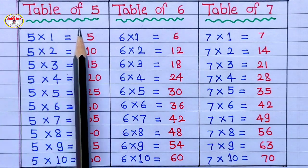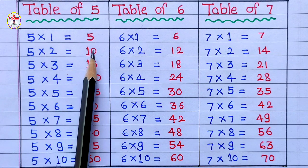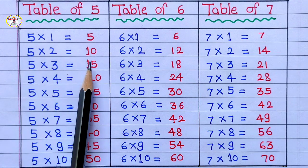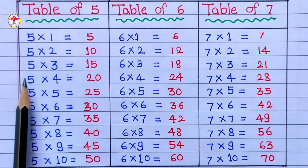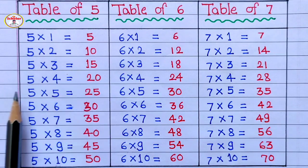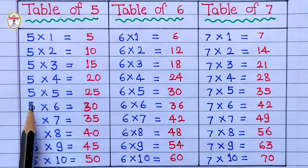Table of 5: 5 1's are 5, 5 2's are 10, 5 3's are 15, 5 4's are 20, 5 5's are 25.